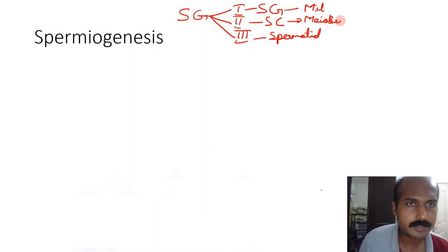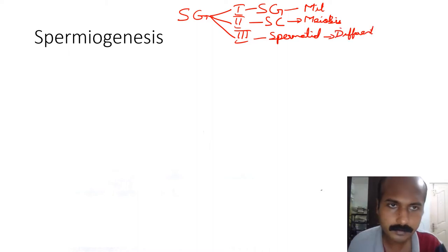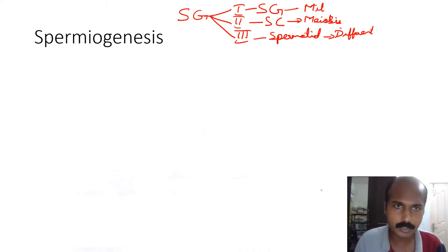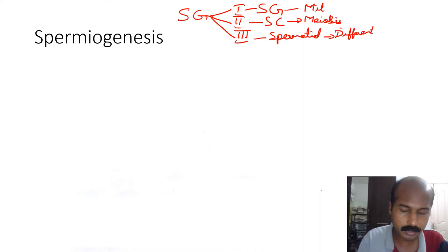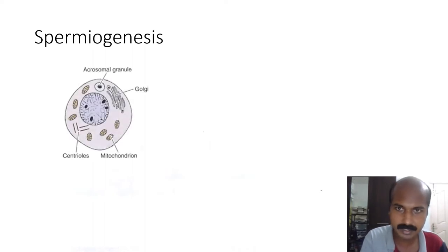The spermatid phase involves no cell division — it is a differentiation process. The morphology is being changed to enable fertilization of an oocyte. Spermiogenesis begins from the spermatid.